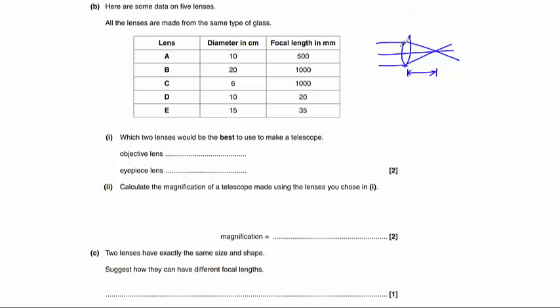And that focal length is inversely proportional to the power of a lens. So a thick, powerful lens will have a short focal length. A thin, less powerful lens will have a long focal length. So which two lenses would be the best to use in a telescope? Well, the objective lens.